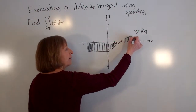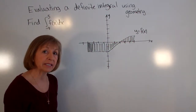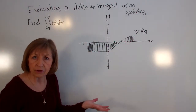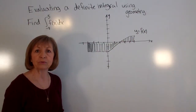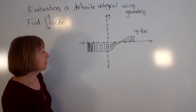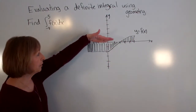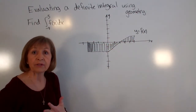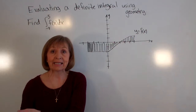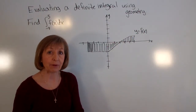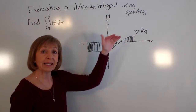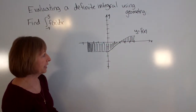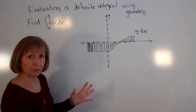In this particular example, some of the function values have negative outputs and some have positive outputs. So when I use my geometry formula for the portion that's below the x-axis, I'm going to have to negate that value from the geometry formula. For the part that's above the x-axis, it will just be the positive value from geometry.